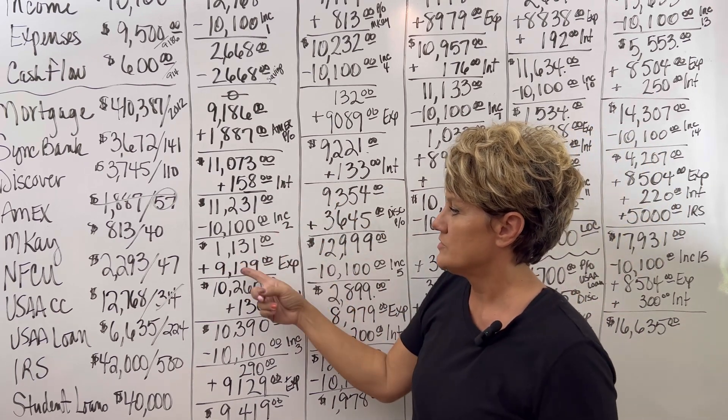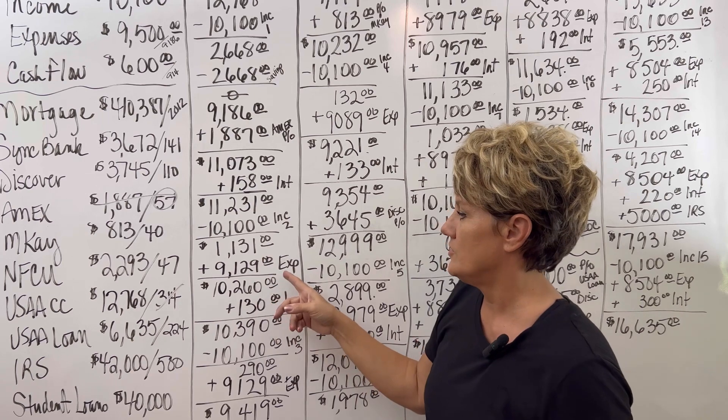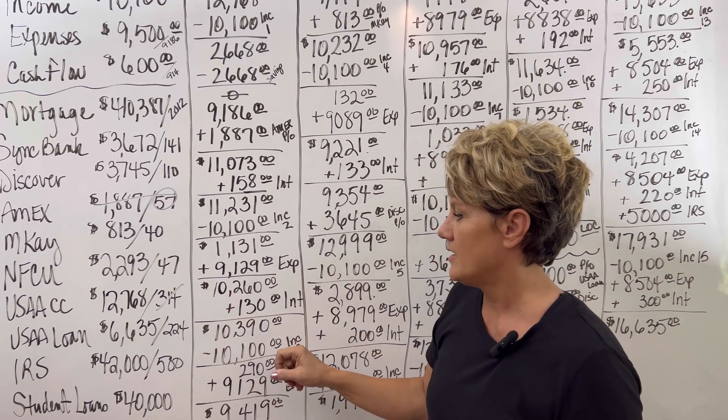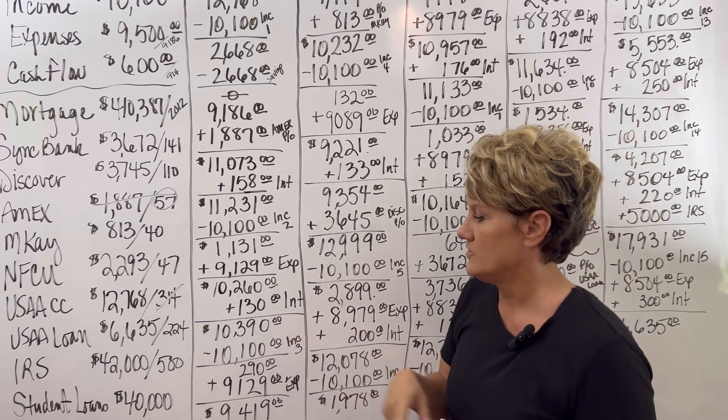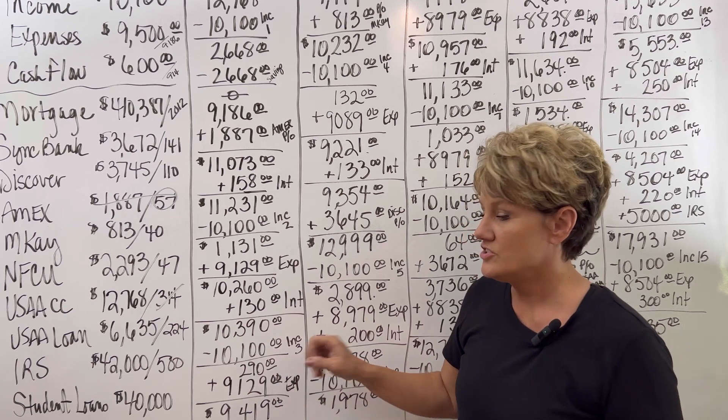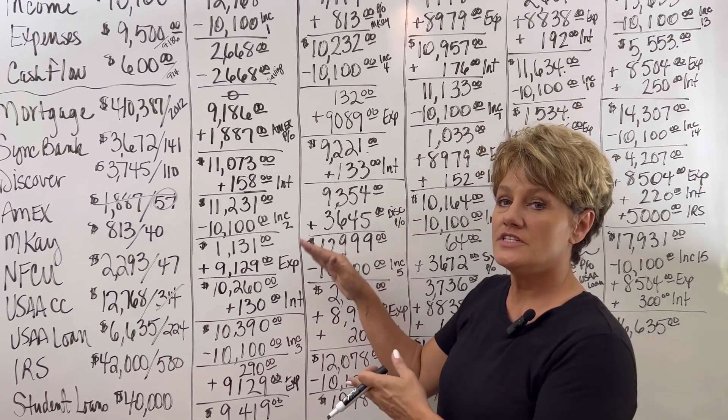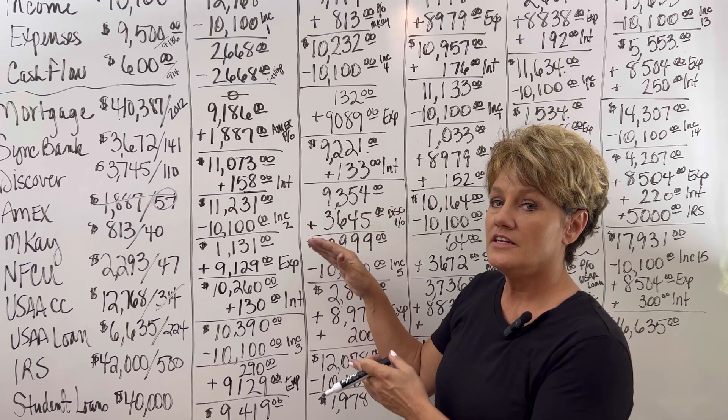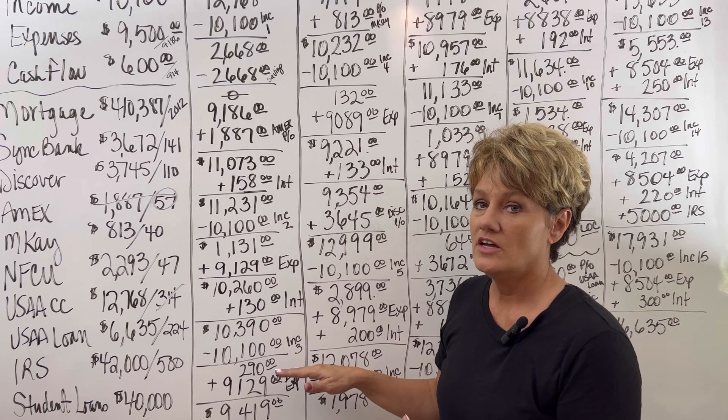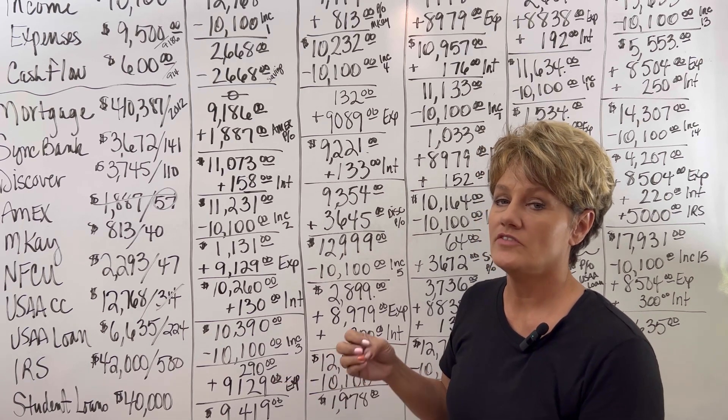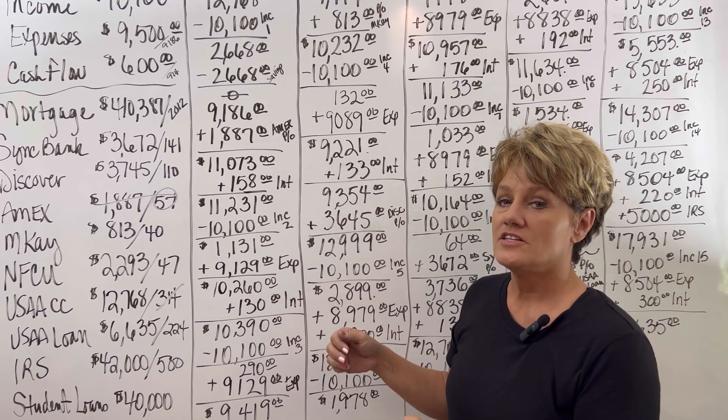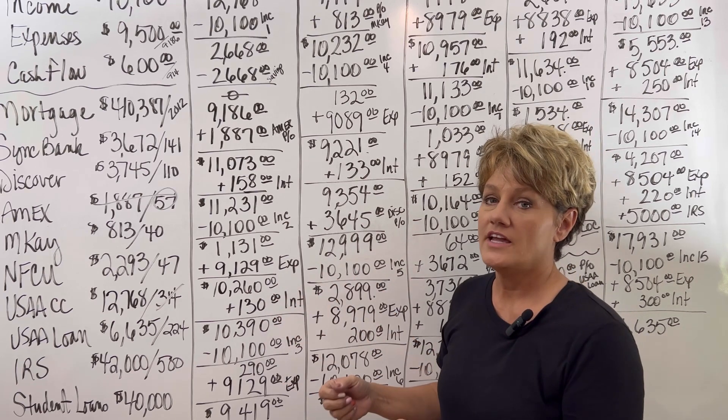In month two, income goes in, bringing the balance down to $1,131. The expenses would come back out through the month, bringing the balance back up, adding in the interest. We're at $10,390. Income three goes in, brings the balance down to $290. Do you see how that we are taking the balances way down, which is completely knocking a lot of that interest off? That's the way velocity banking works, is to knock this balance down that stops the interest feeding on a high principal.